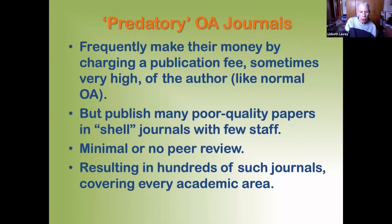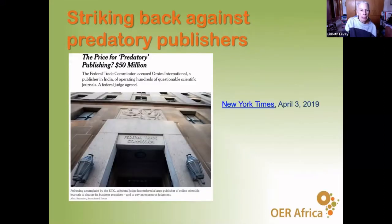Everyone knows about predatory journals — open access journals that are not reputable. They make their money by charging a high publication fee, and the author has to pay very quickly. They publish many poor-quality papers in what we call shell journals; the journals have few staff, articles are not copy-edited and not peer reviewed. There are hundreds of these journals covering every academic area. If the journal in which you're interested is not indexed in the Directory of Open Access Journals, it may very well be a predatory journal. The US Federal Trade Commission has sued and won a case against Omics International, resulting in a $50 million judgment.